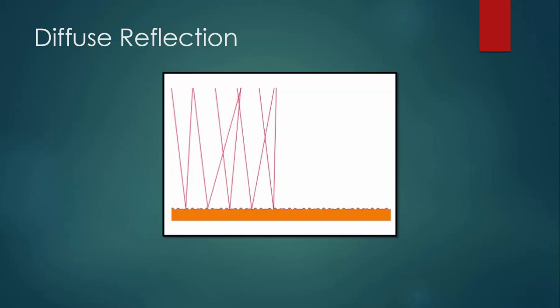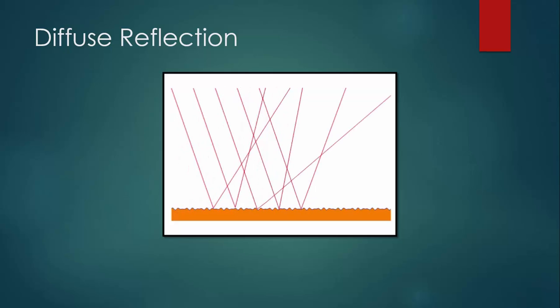Here, the surface is uneven. The incoming rays are parallel, but the outgoing rays are kind of all over the place.